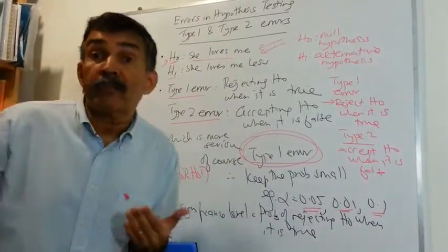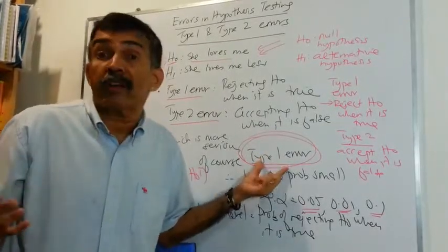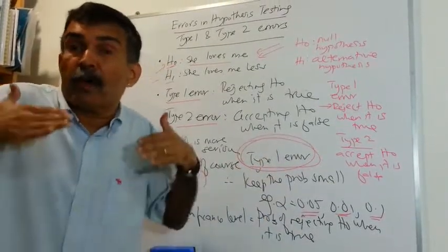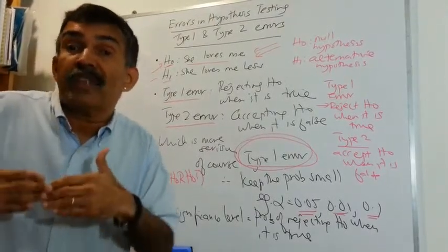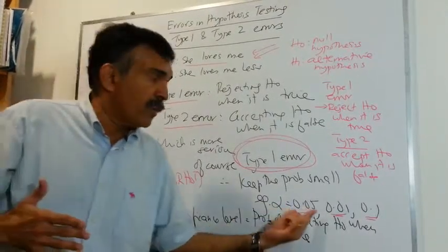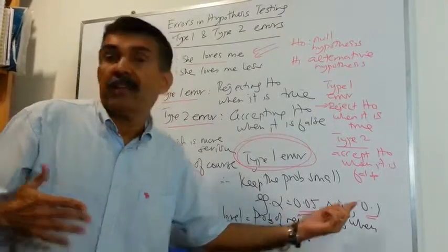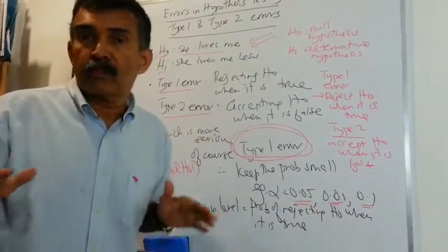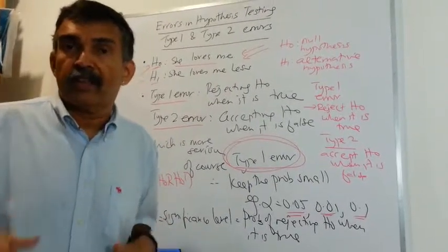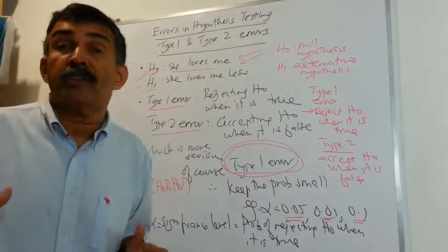That is why we place a lot of emphasis on the Type 1 error. That is why we keep the probability of a Type 1 error small. Most exam questions will give you 5%, 1%, 10%. So keep in mind, Type 1 error is more serious than the Type 2 error. The probability of a Type 1 error is always small.